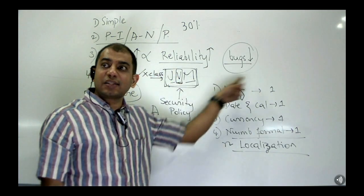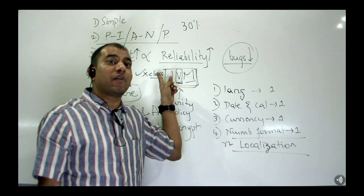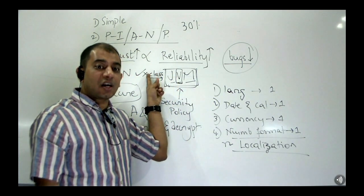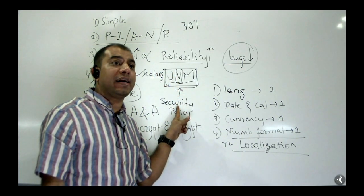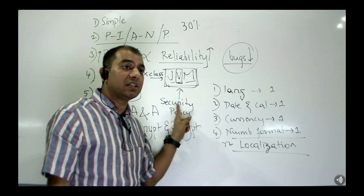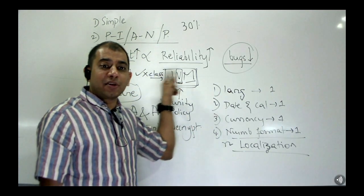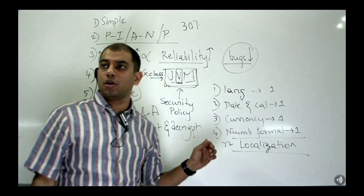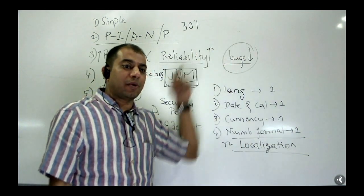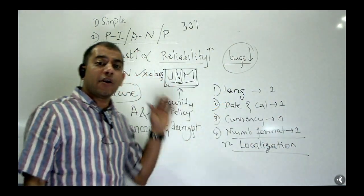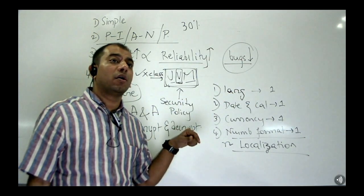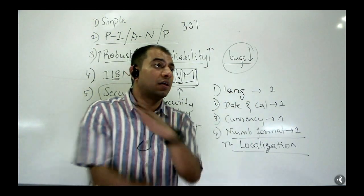JVM interprets and executes it, no? But before interpretation, what will it verify? The instructions in the bytecode. Is it violating, negating your security policy? If the program is trying to write to our disk, don't execute. If the program is trying to connect to some internet, don't execute. If the program is trying to access some folder that it should not access, don't execute.